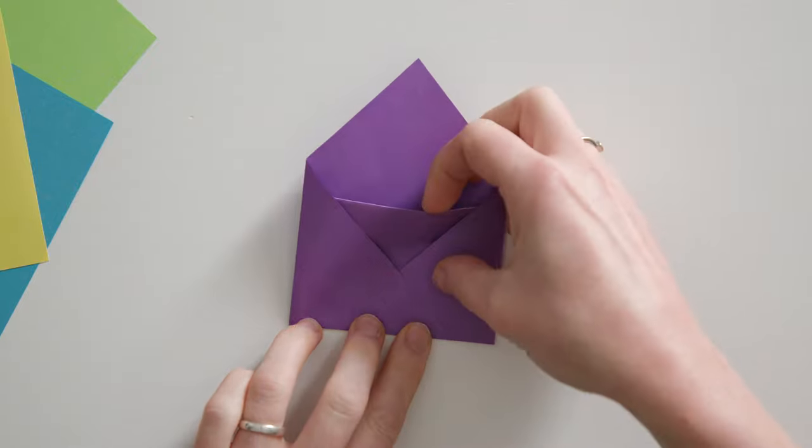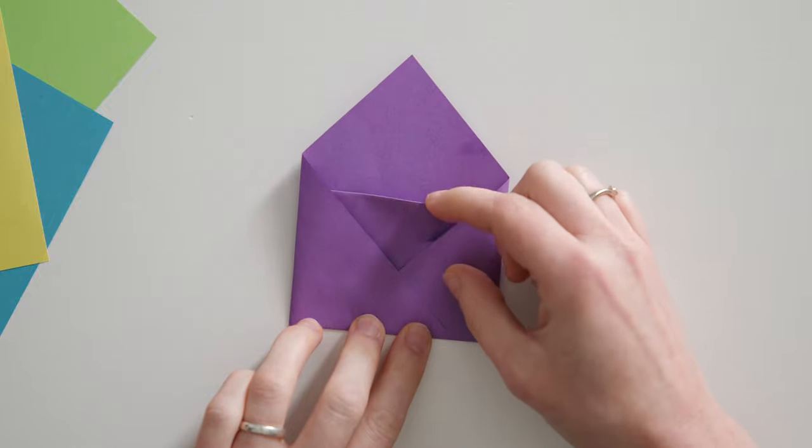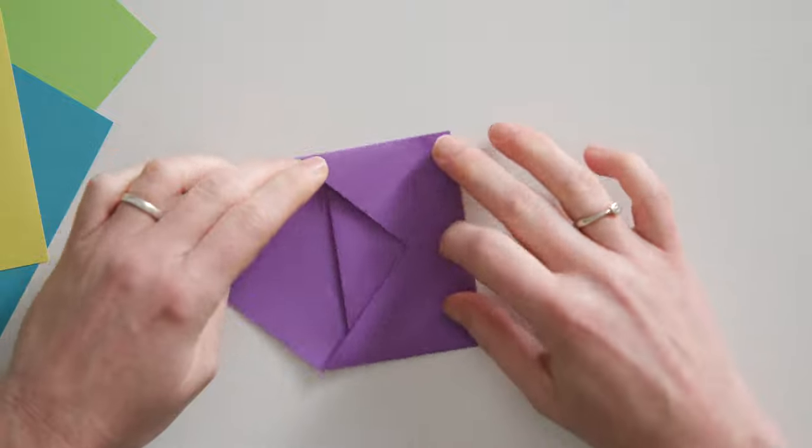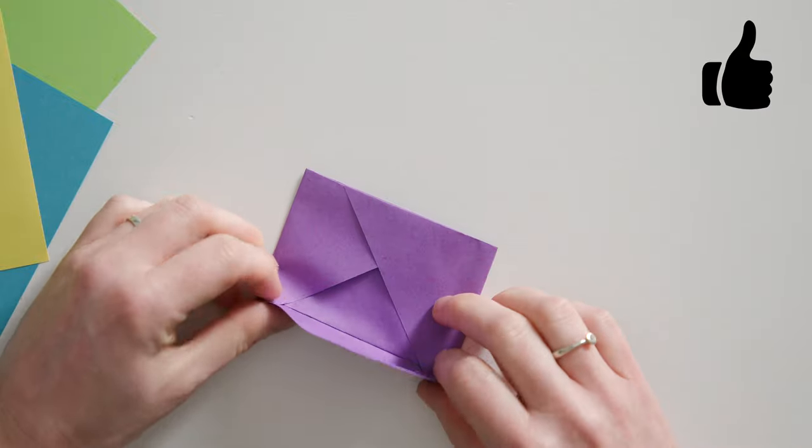Now you can put your gift card in this small pocket at the back of the envelope. Now all you have to do is fold this tip down in the middle and then you have easily made your own envelope from a piece of paper.